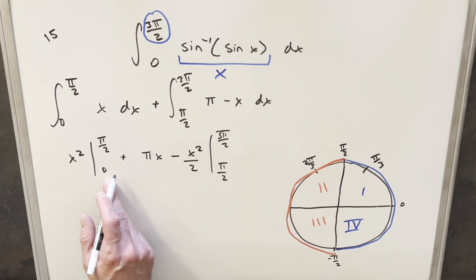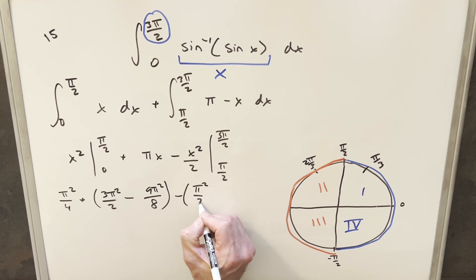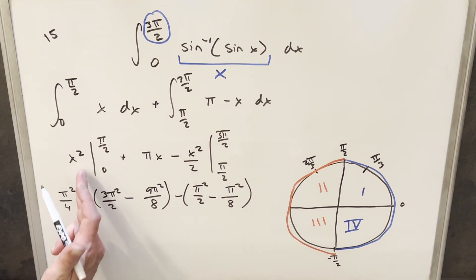Then evaluating this, the 0 is nothing, so this is going to give me π²/4 for the first piece. Then here, we'll plug in 3π/2, so that's going to give me 3π²/2. Then squaring 3π/2, that's going to give me 9π²/4 divided by 2. So we're going to have 9π²/8. And then evaluating at π/2, that's going to give me π²/2 here. Then we'll have our minus sign, then plugging in π/2 squared is going to give me π²/4 divided by 2 is π²/8.